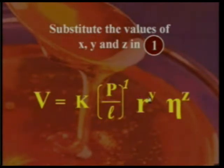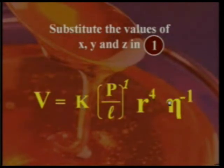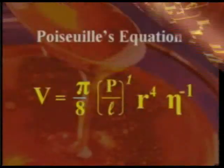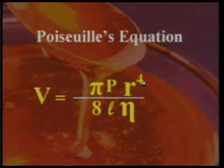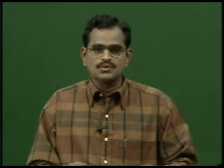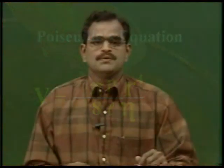With x equal to 1, y equal to 4, and z equal to minus 1, and experimentally it is observed that K equal to pi by 8. Therefore, rearranging, the final Poiseuille's formula is V equal to pi p r⁴ by 8 l eta. This is the equation of Poiseuille for the flow of liquid through a capillary tube.